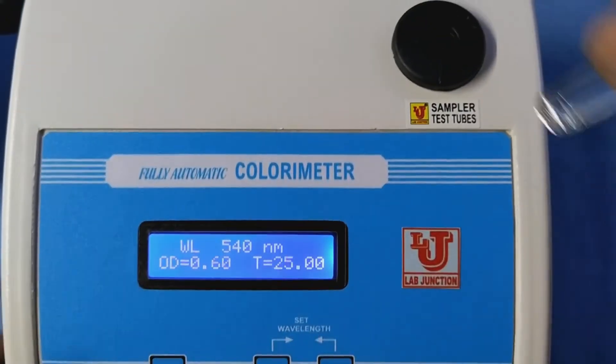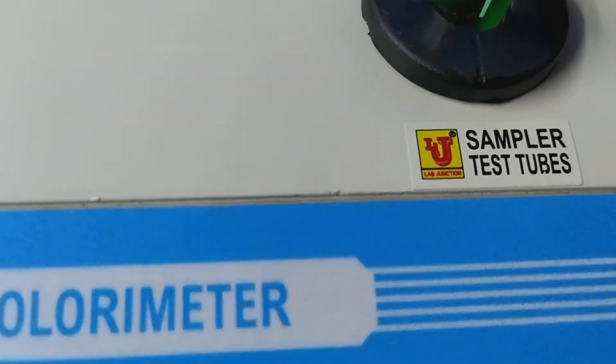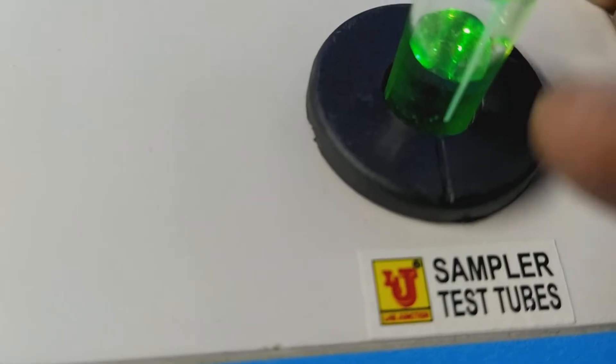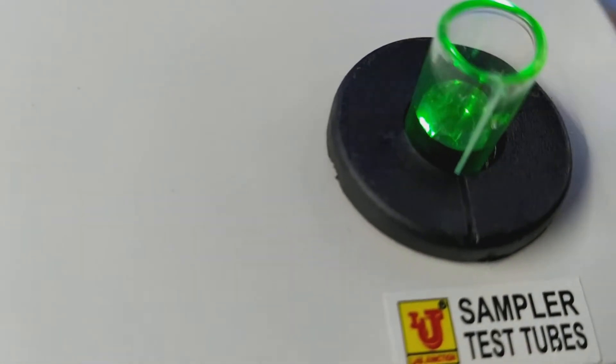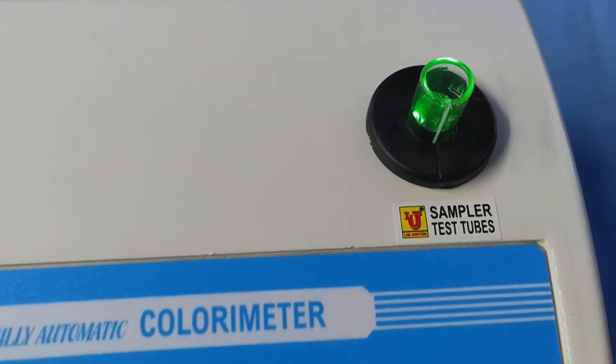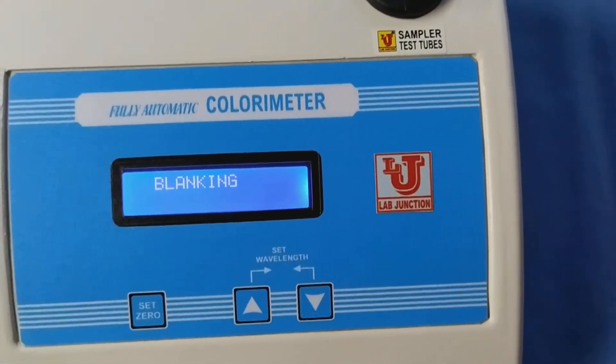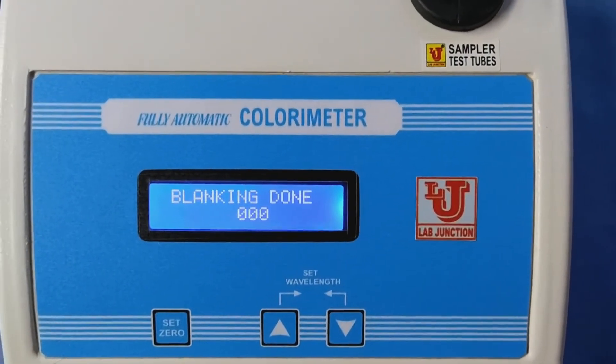Now, insert test tube. Please coincide test tube mark with this mark and completely insert. And press set zero. Blanking done.